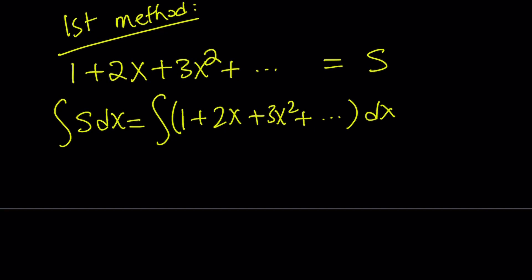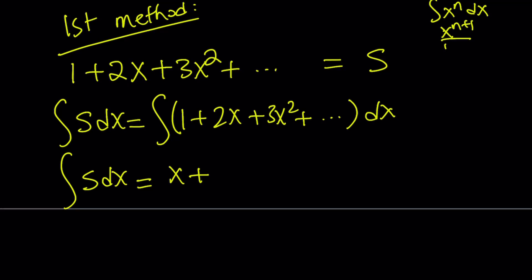When you integrate this, you get the integral of S dx. If you integrate 1, you get x. The rule for x to the power n, as long as n does not equal negative 1, says x to the power n+1 divided by n+1. So x becomes x squared and divide by 2, but the 2 in front makes it x squared. You can also think of it this way: 2x is the derivative of x squared, and 3x squared is the derivative of x cubed, so on and so forth.